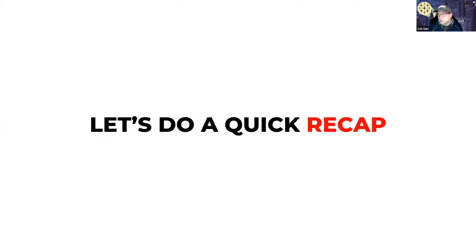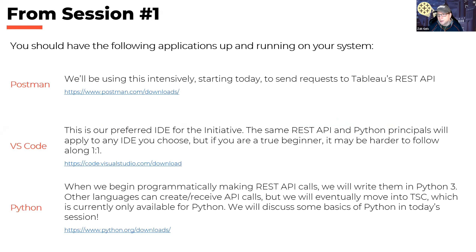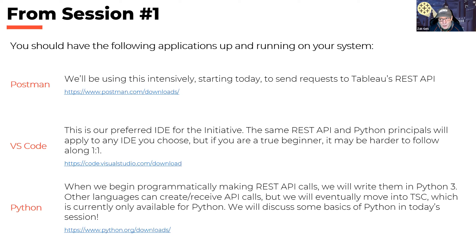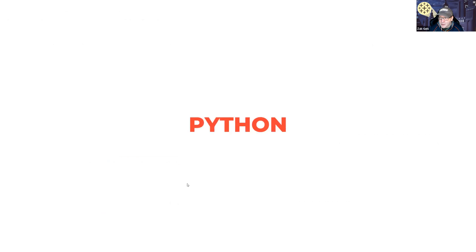Let's do a quick recap of what we learned last week. The most important thing from session one is that you have these three things downloaded: Postman, Visual Studio Code, and Python. You should also have established yourself a site on the dev site for Tableau Online. That's really about all we're going to talk about from session one — we're going to go into Python now.